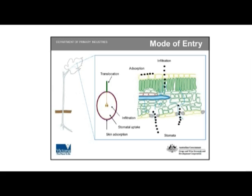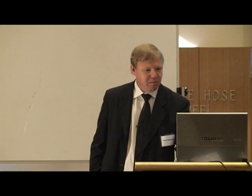We need to explore that more closely, and obviously the same question applies to the grape. This hints at: if it's going into the leaf, is it possible for it to travel from the leaf into the plant? This is an area we're very keen to pursue. We've done a little work — Mark and Nicole Dimos did some work where if you cut a shoot off and dip it in a solution of guaiacol or 4-methylguaiacol, it travels quite rapidly to the fruit. But that's an artificial situation — is it the same if it's been taken up by the leaf? We don't know yet; that's why I've put a question mark here. In vivo, we don't know exactly what happens in the living plant.